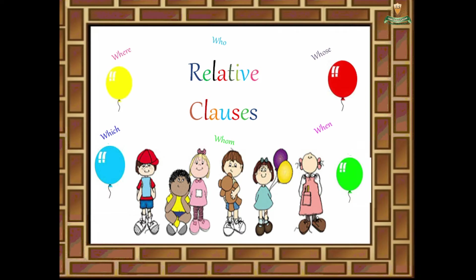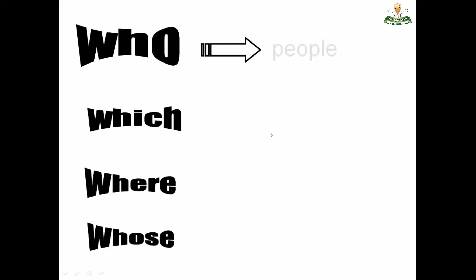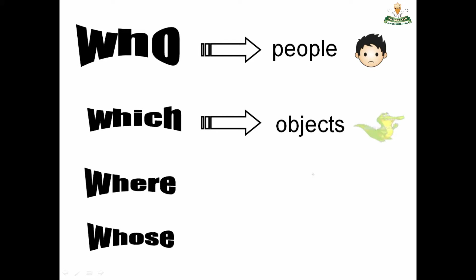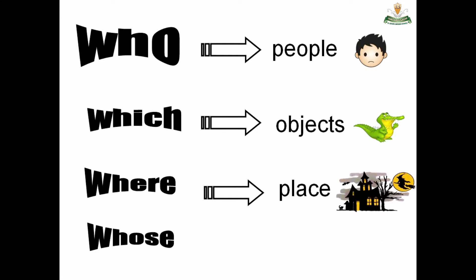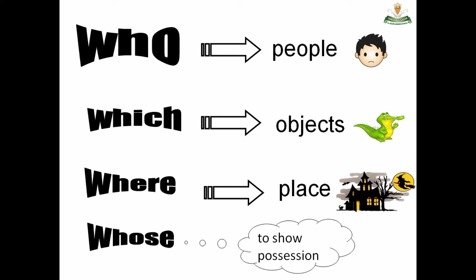Hello everybody, today we are going to talk about relative clauses. We have: where, who, was, when, whom, which, and whose. Let's start. Who represents people. Which represents objects, animals, or things. Where represents places, like home, supermarket, or airports. And whose is used to show possession.